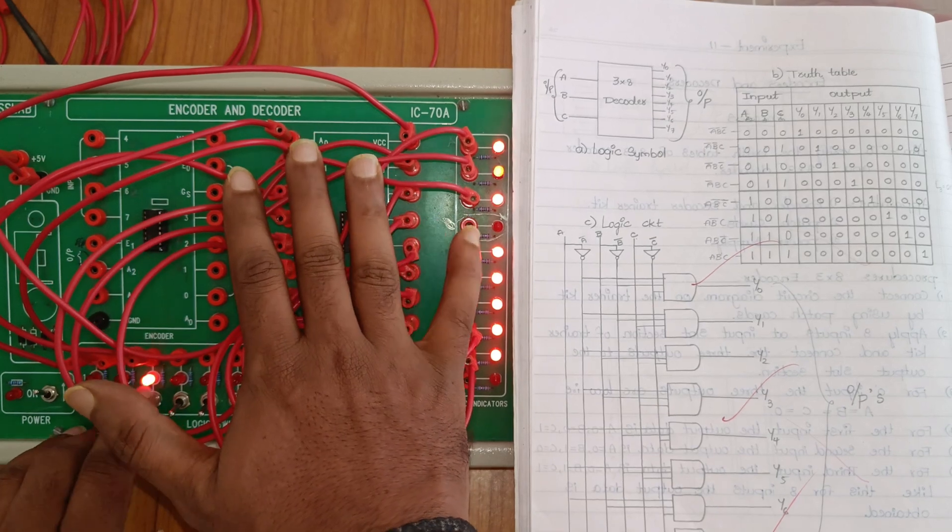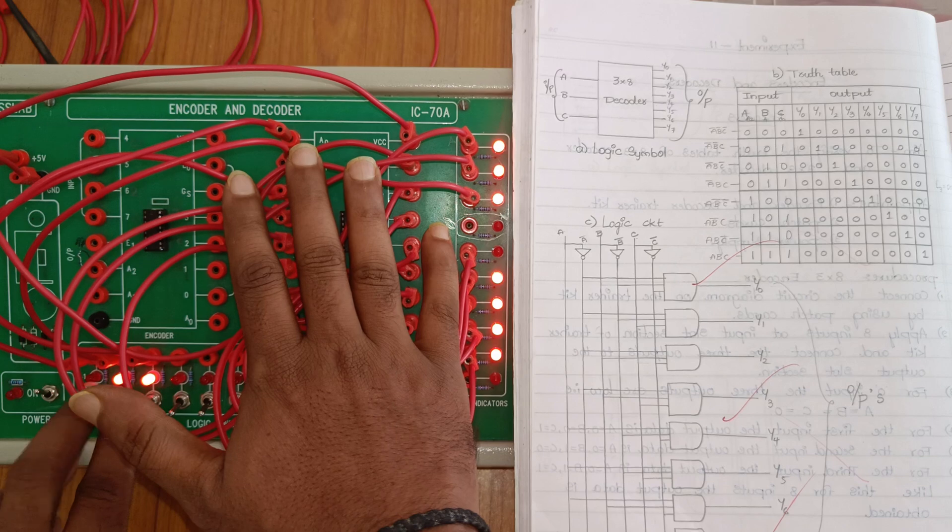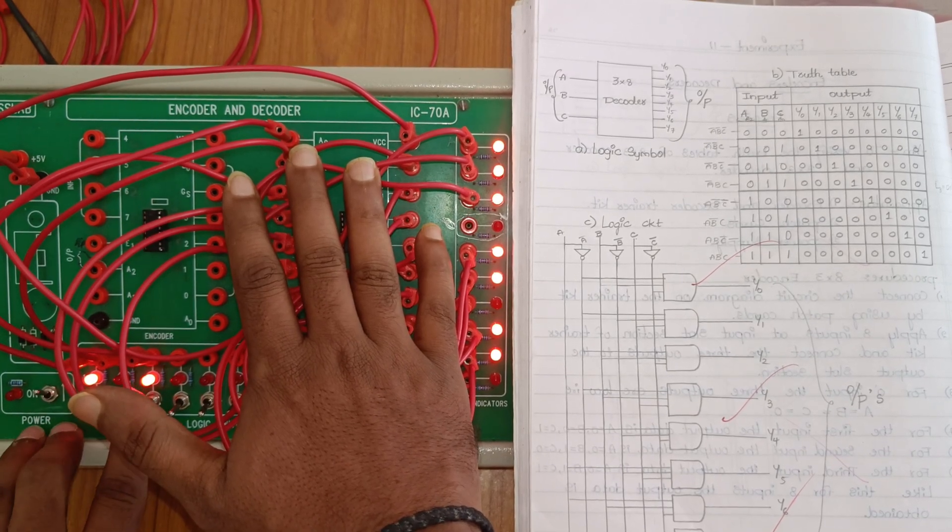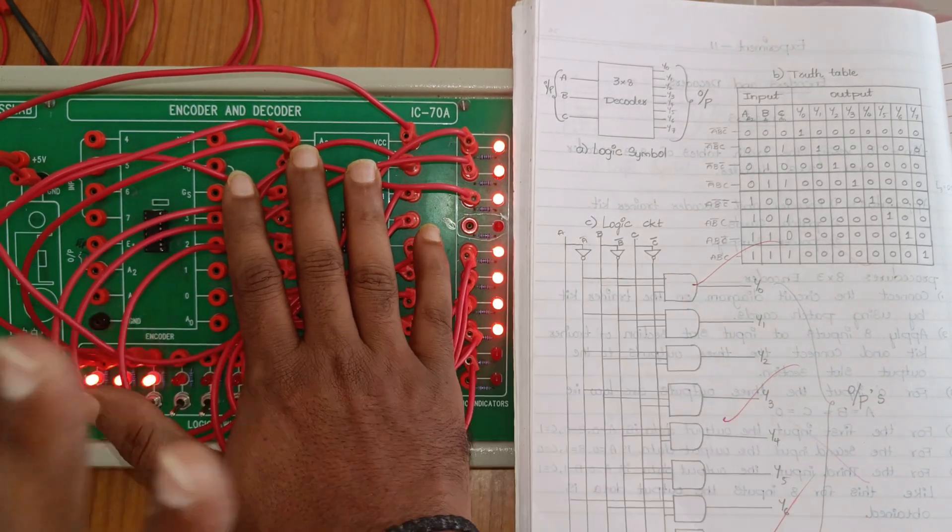001 is second, 010 is third, 011 is fourth, 100 is fifth, 101 is sixth, 110 is seventh, and 111 is eighth - eight outputs total.